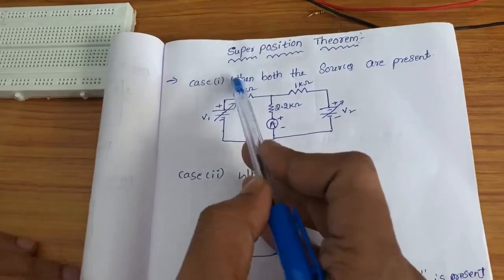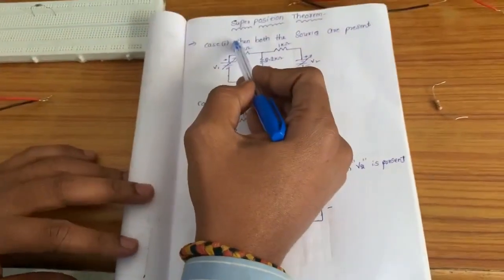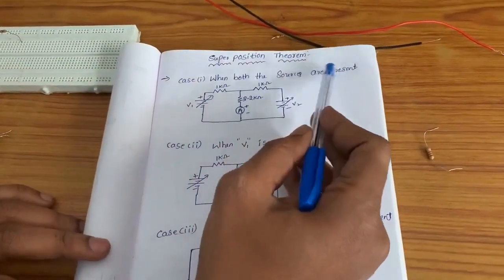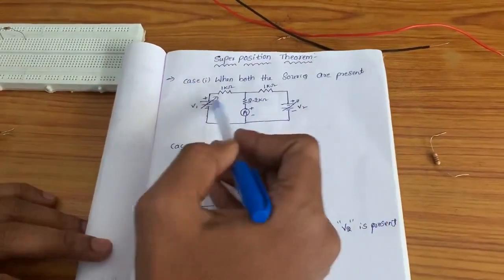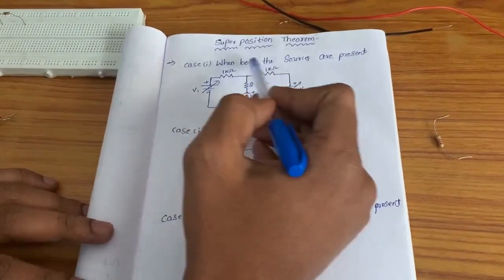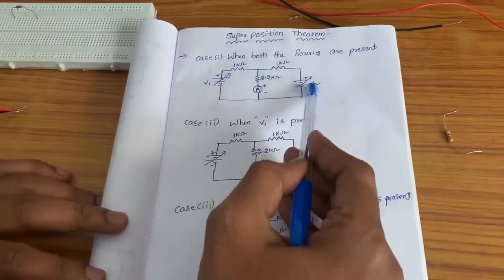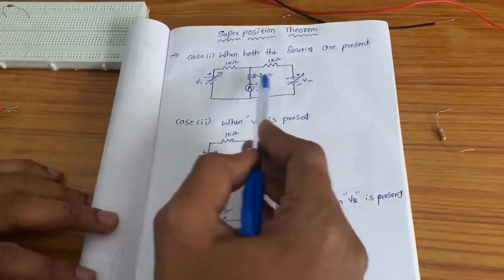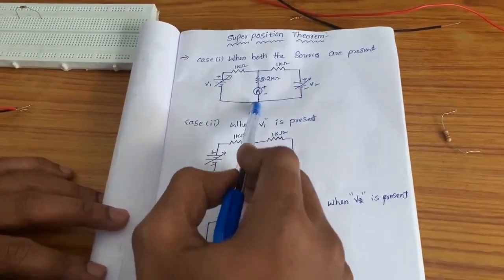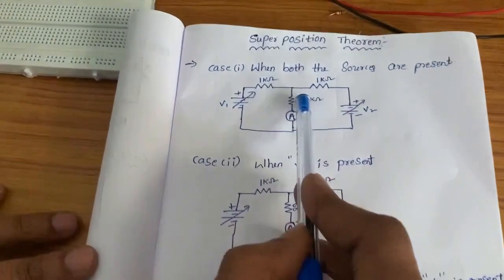There are three cases in total. The first case is when both the sources are present. First, we will conduct the experiment for case 1, when V1 and V2 both are present. We will see the response in this branch — the 2.2 kilo ohm resistor.